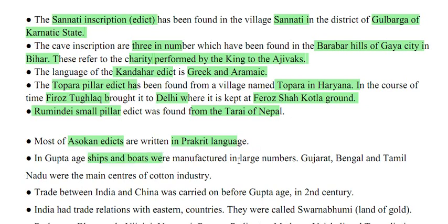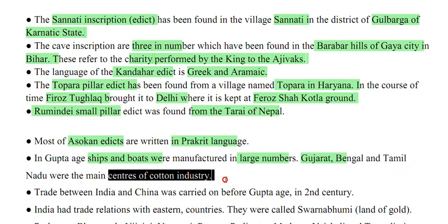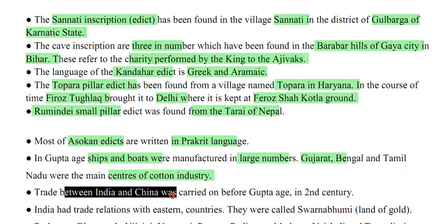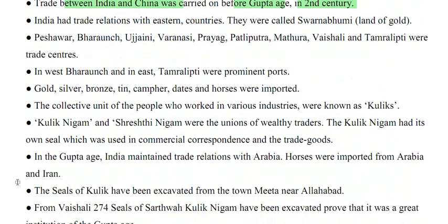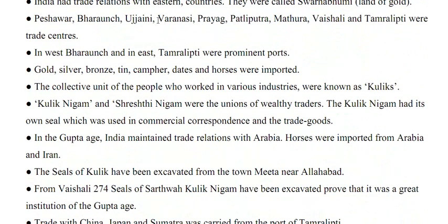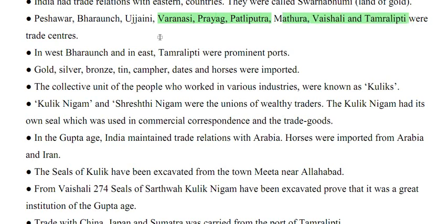In the Gupta age, ships and boats were manufactured in large numbers. Gujarat, Bengal and Tamil Nadu were the main centers of the cotton industry. Trade between India and China was carried on before the Gupta age. In the 2nd century, India had trade relations with eastern countries, called Solnabhumi (land of gold). Prominent trade centers were Peshawar, Bharuch, Ujjaini, Varanasi, Prayag, Pataliputra, Mathura, Vaishali and Tamralipti. In the west, Bharuch, and in the east, Tamralipti were prominent ports.